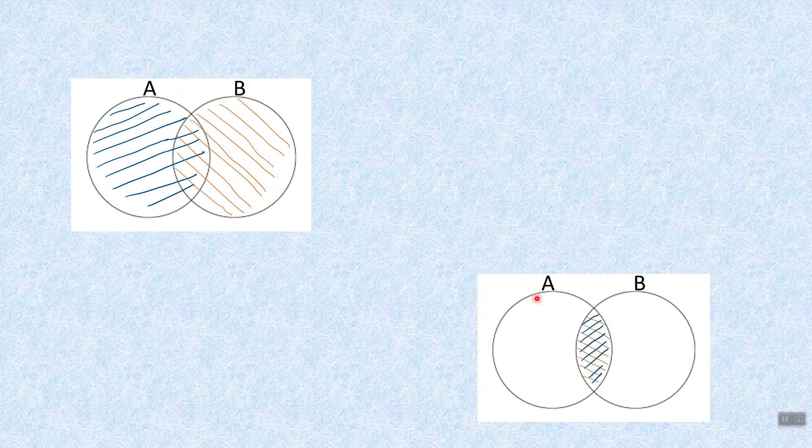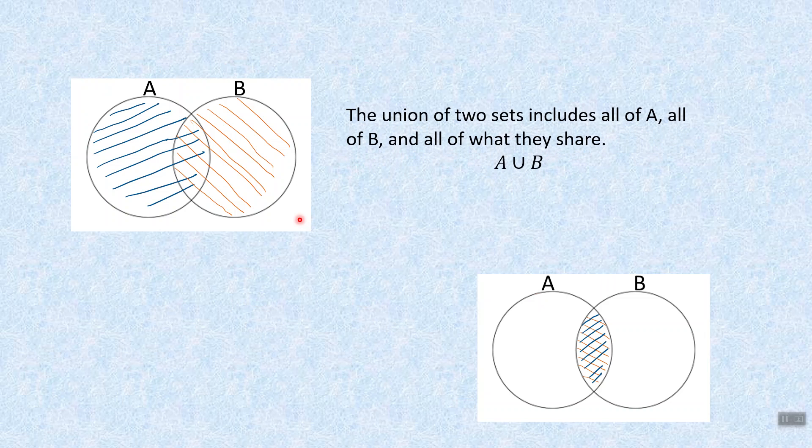Here we have two Venn Diagrams. Let's look at the top left. The union of two sets includes everything in A, everything in B, and whatever they have in common. A union B. Marriage is one of the unions that we are familiar with. It's all of your stuff, all of their stuff, all the stuff you got together.